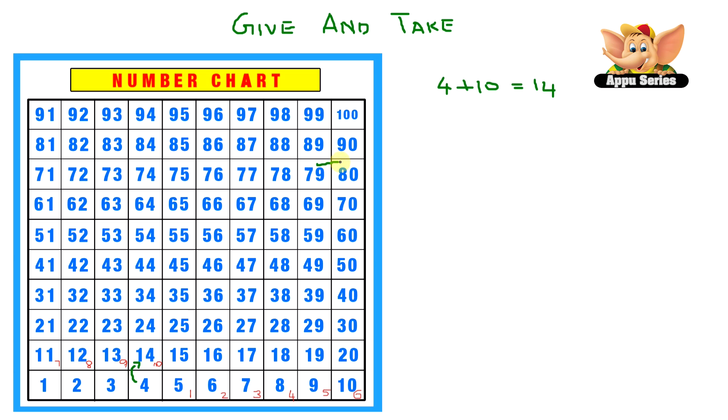If you see over here, if you jump right, you're adding one number. And if you jump left, you're subtracting a number.